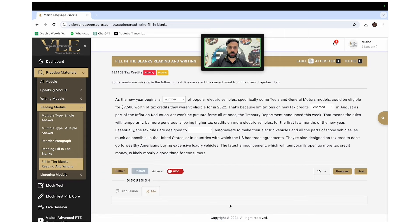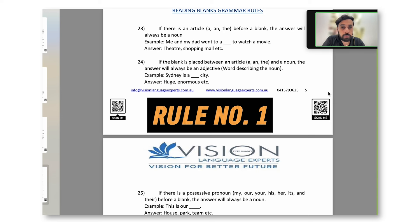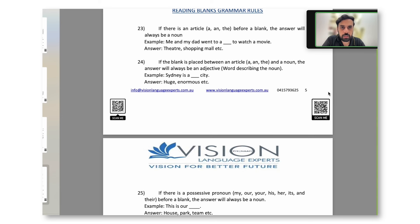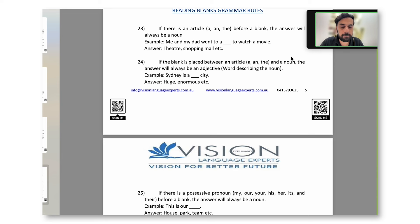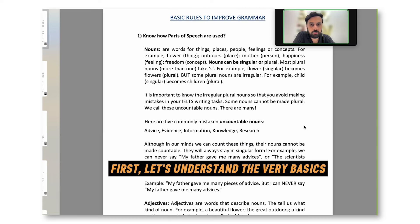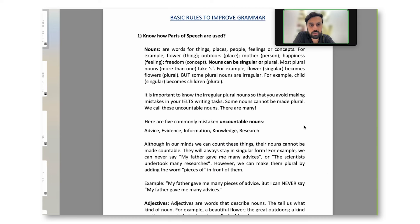Let's talk about grammar rules — shortcuts that will help you score better in reading and writing fill in the blanks. Whenever there is an article before a blank — such as 'a,' 'an,' or 'the' — the answer is always going to be a noun. For example: 'Me and my dad went to a dash to watch a movie' — went to a theater, went to a mall. Because there's an article before the blank, the answer is always a noun.